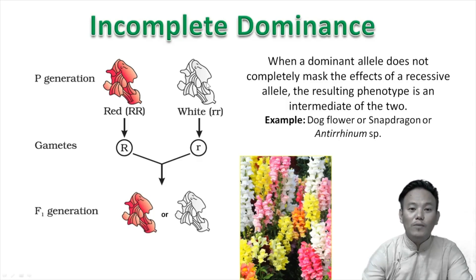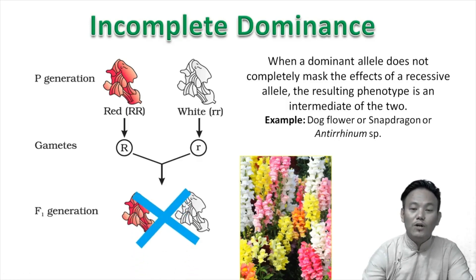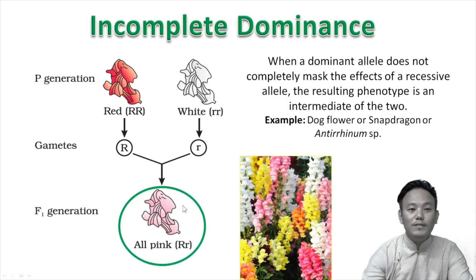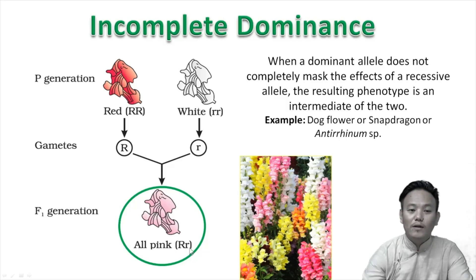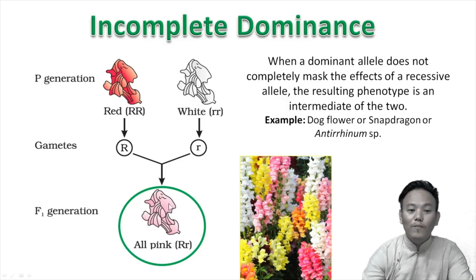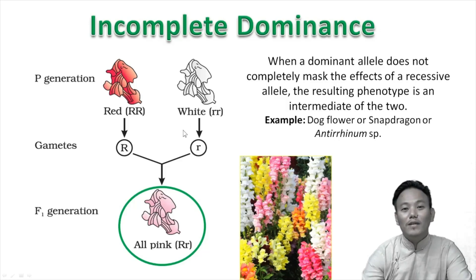If red were completely dominant over white, the F1 generation would have been all red; if white were completely dominant, all F1 would be white. But that is not true for snapdragon plants. What we observe is that all the F1 generation plants were pink-flowered. The F1 hybrid receives a capital R from one parent and a lowercase r from the other, but capital R is not completely dominant over lowercase r, so we observe a phenotype intermediate between the two parents. This phenomenon is called incomplete dominance.